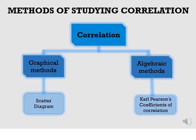What are all the methods available to study about correlation? Correlation can be studied using graphical method and algebraic method. For graphical method, we use the scatter diagram method. For algebraic method, we use Karl Pearson coefficient of correlation.